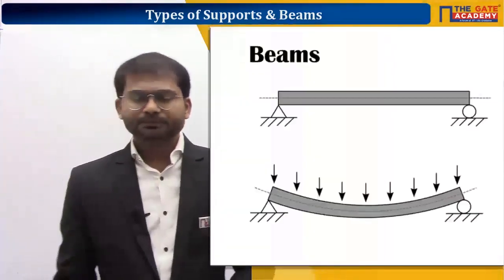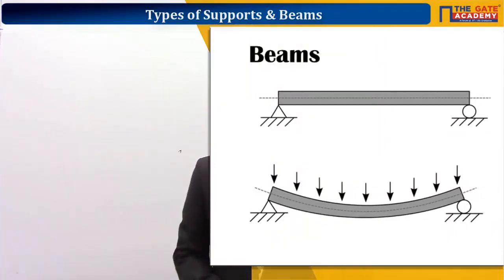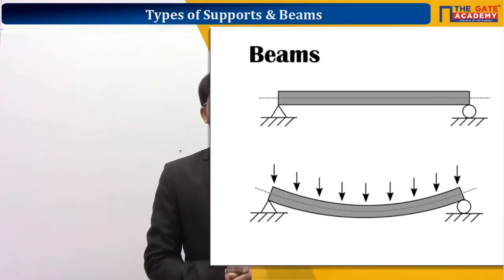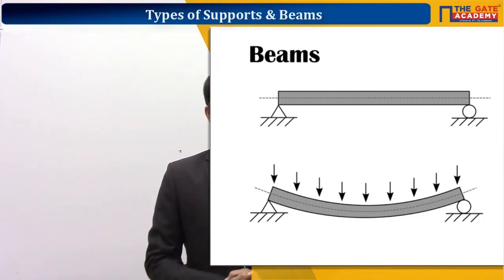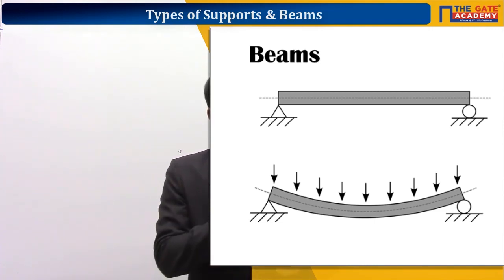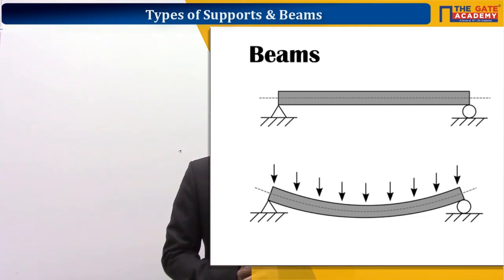If you see a member, as shown on the secondary screen, this member will undergo bending if a load is applied perpendicular to the length — that is, in the transverse direction. If you apply a load perpendicular to the length, bending will happen. We call the direction along which the load is applied the transverse direction, and the direction along the length as the longitudinal direction.